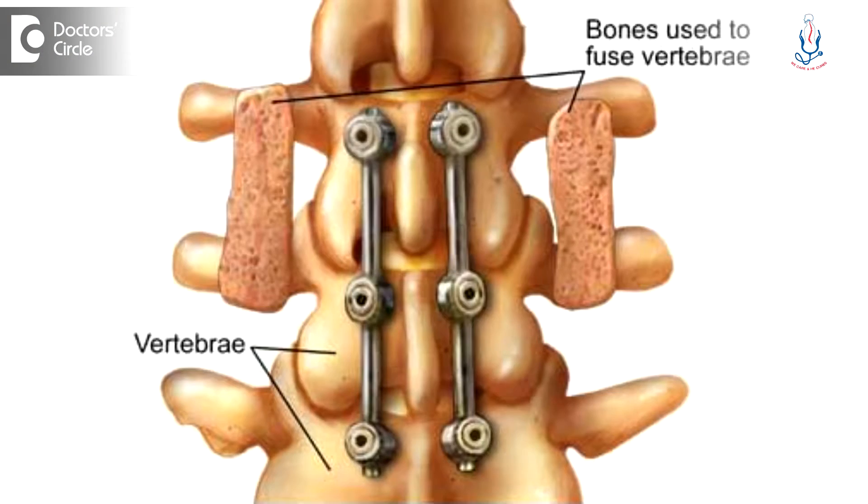In such x-rays, if we see movement of one vertebra on another, that means the spine is unstable. An unstable spine needs to be fixed — it needs to be fused. You cannot do a disc replacement or a simple discectomy in such cases; you need to have spine fusion.